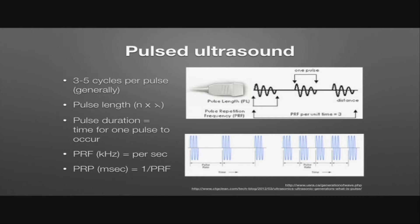If we consider the pulses in their entirety — both the time to send out the pulse as well as the time to wait for the received echo — we can get an idea of what the pulse repetition frequency is, or how many times we send out that pulse per second. That's typically measured in kilohertz, or thousands of cycles per second.